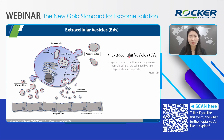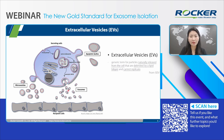Extracellular vesicles, EVs, are lipid bilayer-enclosed nanoparticles that are naturally secreted by almost all living cells. They carry proteins, RNA, DNA, and lipids, delivering them to recipient cells, influencing their behavior and function. Thus, EVs are pivotal in intercellular communication, impacting both physiological and pathological processes, and this has sparked huge interest in EV research in the scientific community.